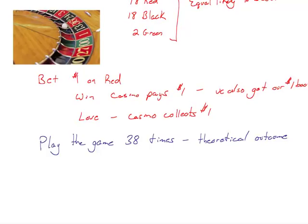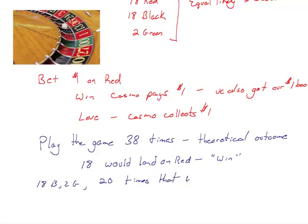The theoretical outcome is if each slot is equally likely and I played 38 times, then the ball landed in every one of those 38 slots. Out of 38 times, 18 would land on red, and for us that means we win. The other 20 times, 18 are black, 2 are green, so we have 20 times that we're going to lose. Obviously the casino is going to take our dollar.